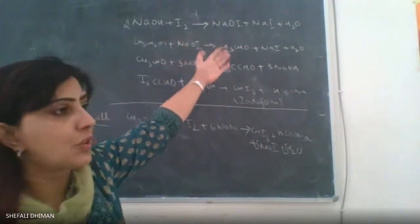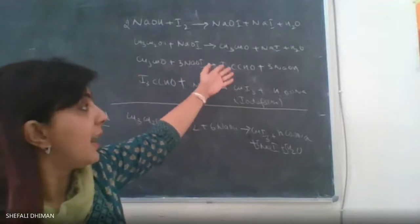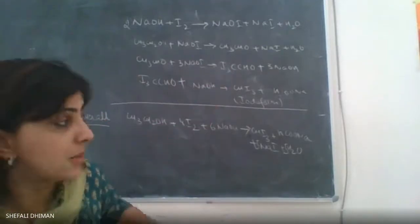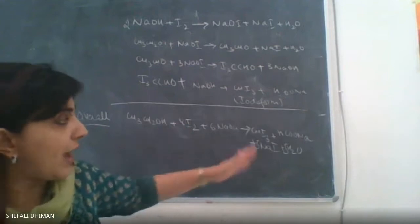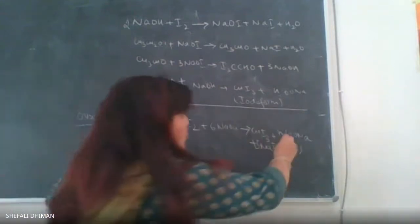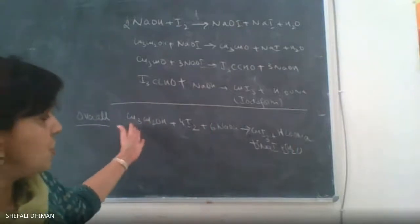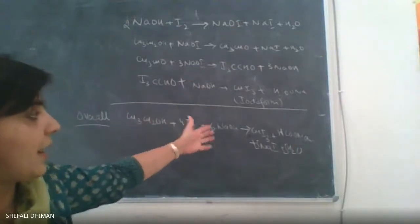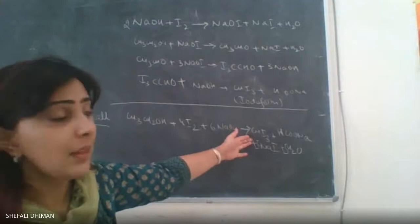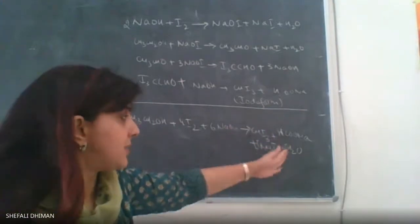When you write the overall reaction, the overall reaction is: you have ethanol, iodine and NaOH. They form Iodoform, sodium acetate, sodium iodide and water.